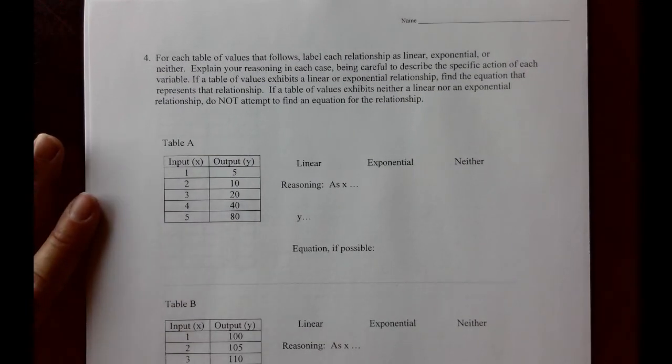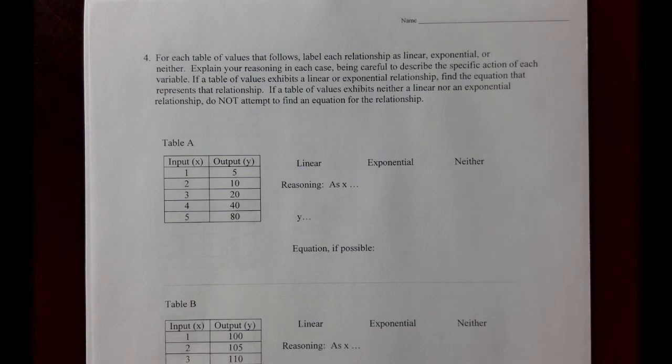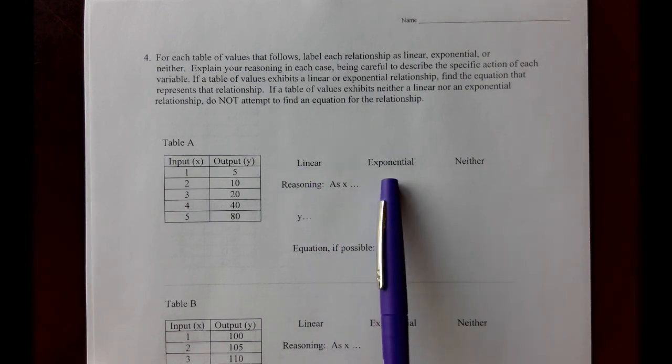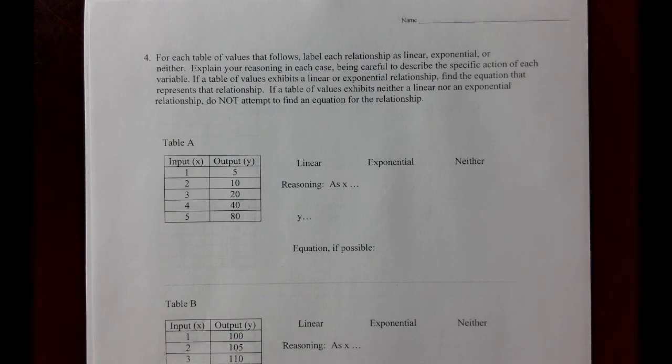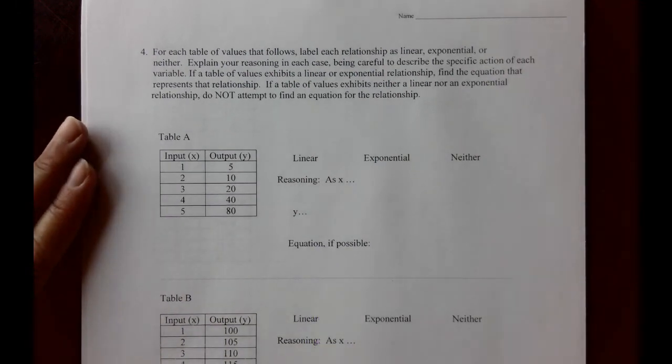As always, I recommend that you pause the video, try each problem for practice, and then return to the video to see if your results match mine. In these practice problems, we need to decide whether we have a linear, exponential, or neither type of relationship present in the table. We're going to explain our reasoning, being very careful to discuss the specific action of each variable in each case, and then if we do have a linear relationship or an exponential relationship, we're going to attempt to write the equation that goes with that.